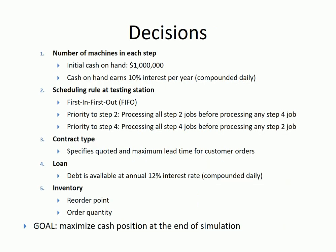You have more decisions this time. You're initially given cash of one million dollars. If you leave the money in the bank, it generates an interest of 10% annually, compounded daily. Your first decision is on the number of machines in each station. You can adjust the number of machines by selling or buying machines.